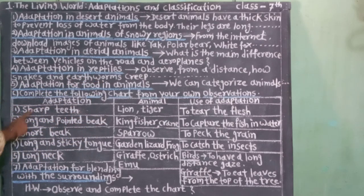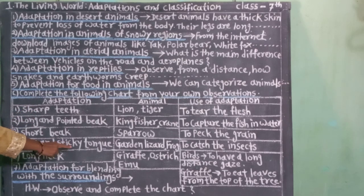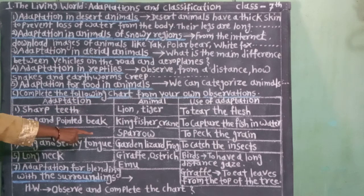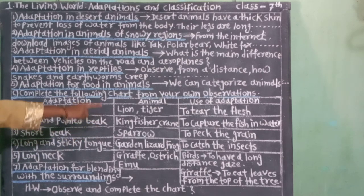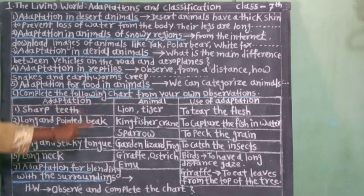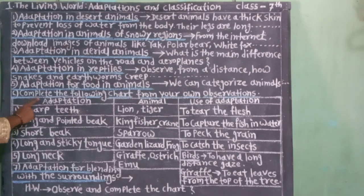Number 4. Adaptation: long and sticky tongue. Animal: garden lizard, frog. Use of adaptation: to catch the insects.